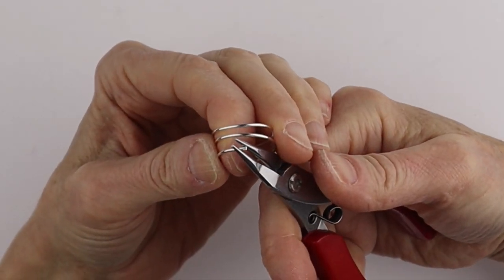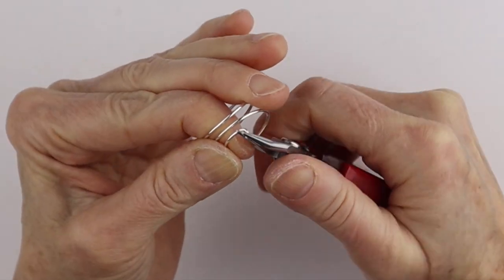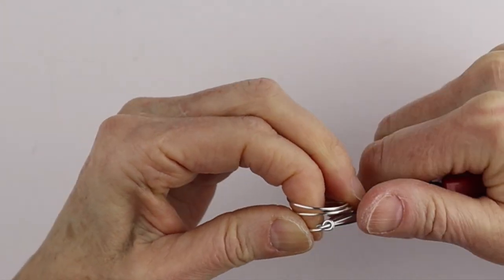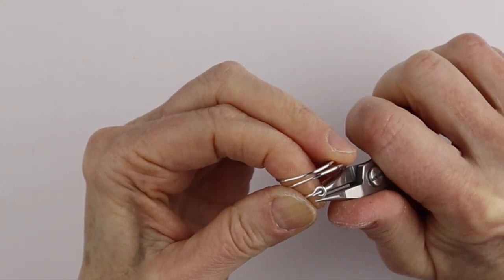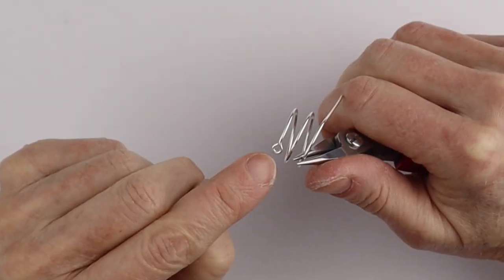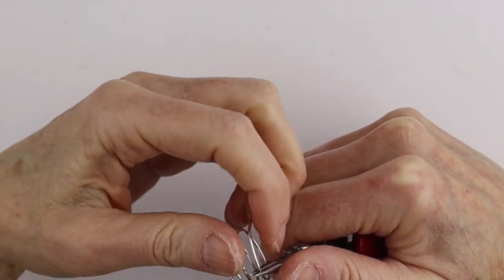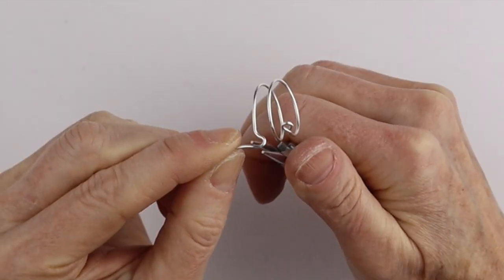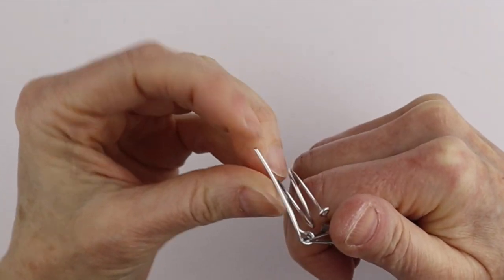And I'm going to take my round pliers, bring it around. And then I'm going to bend it that way so this is somewhat centered. So just to this side of the loop, we're just going to bend it out and then around.